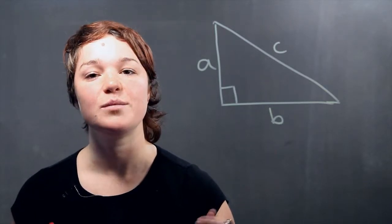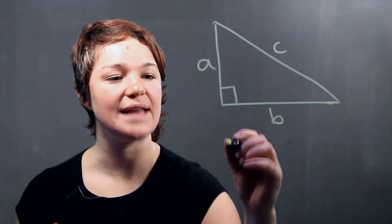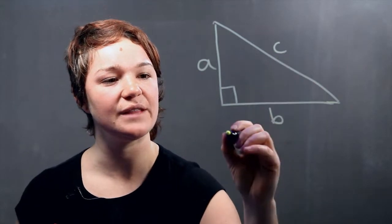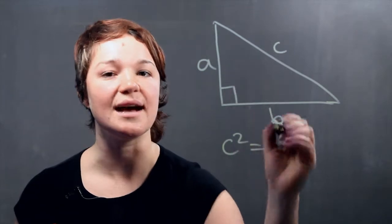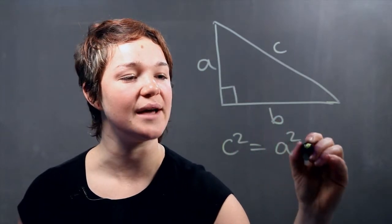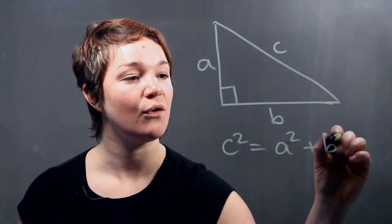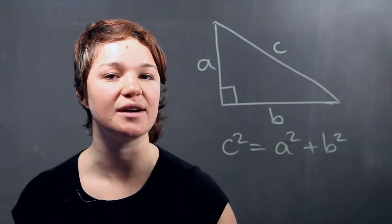So what Pythagoras theorized was that the longest side, the length of the longest side squared, is equal to the other sides squared and combined. Or C squared equals A squared plus B squared.